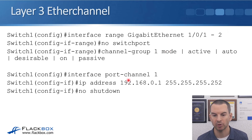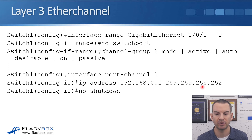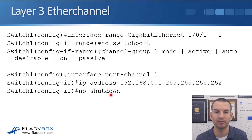We say 'interface port-channel 1' — the 1 ties up with the EtherChannel group number — and then in this example we've set IP address 192.168.0.1 255.255.255.252. Remember to do a 'no shutdown' on the interface. That is a layer 3 EtherChannel — that's the complete config.